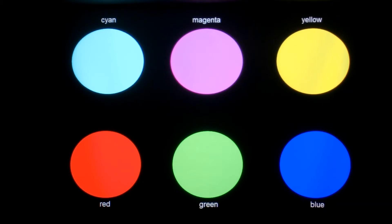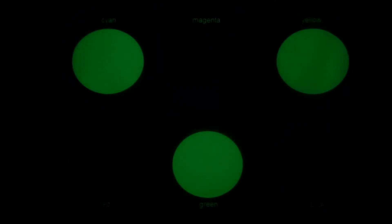A green filter allows green to pass through, but blocks out red and blue. So when we put it in front of the camera, the cyan, the green, and the yellow appear green, but the red, the magenta, and the blue go black.